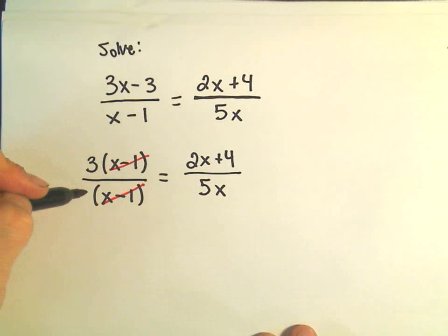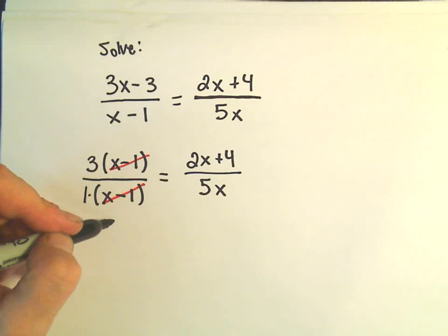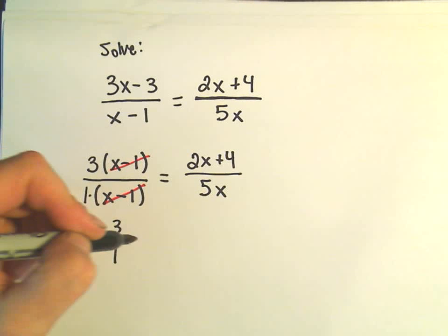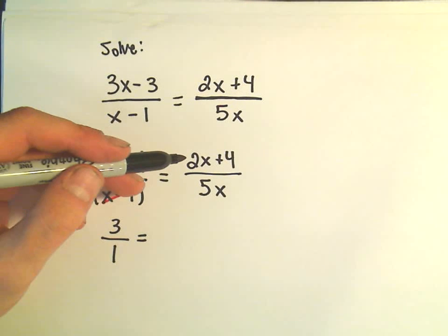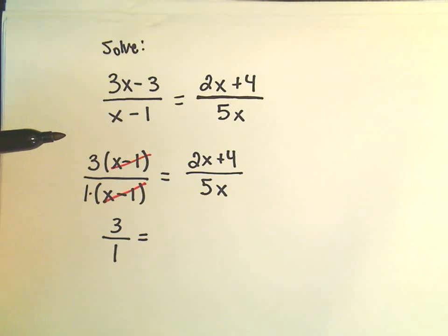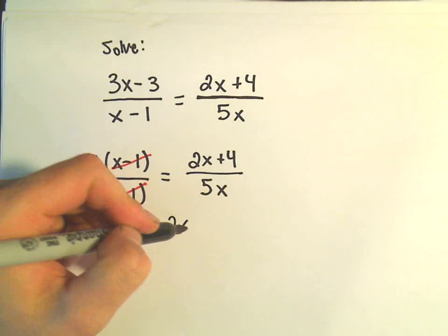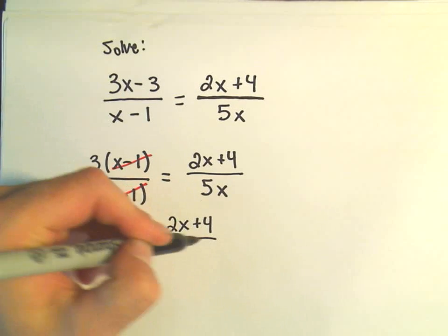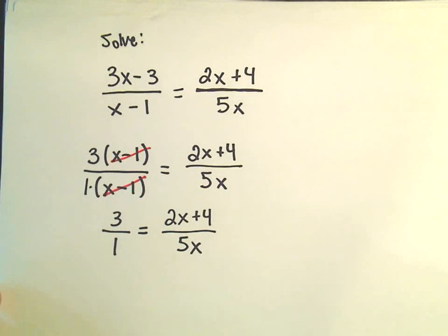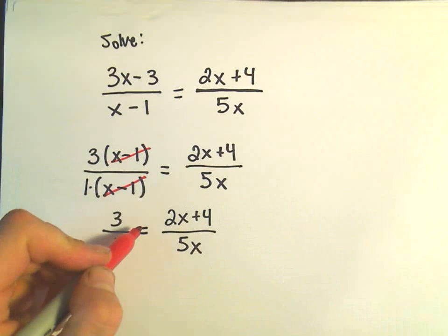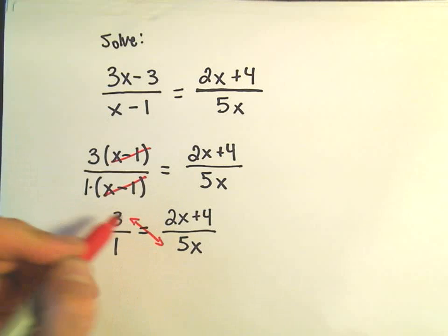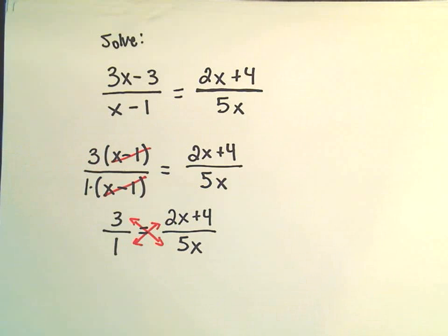After canceling out the x minus 1s, on the left side you can think of there being a 1 in the denominator, so we still have 3 over 1. On the right side, I could factor a 2 out of the numerator, but that's not really going to cancel out anything, so I'm just going to leave it alone. Now I'm going to do the same thing as in some of my other examples — I'm simply going to cross-multiply, and that's going to turn this problem into a nice little linear equation that won't be too bad to solve.